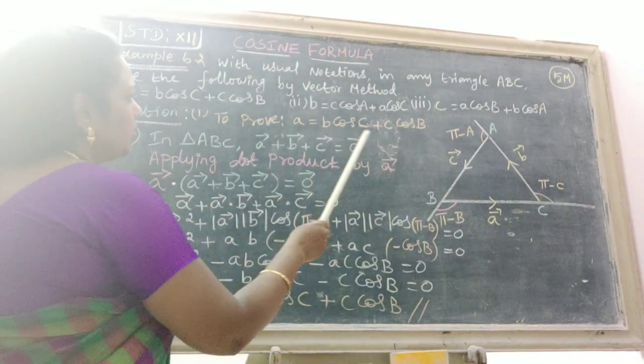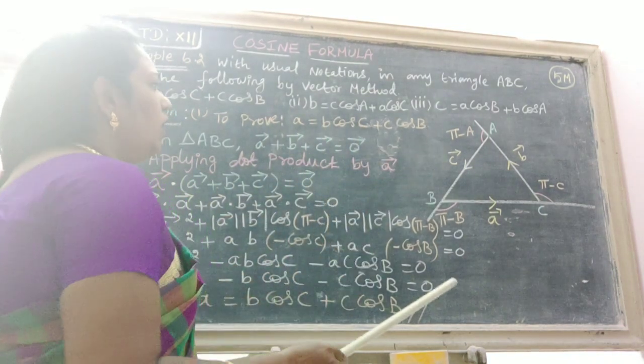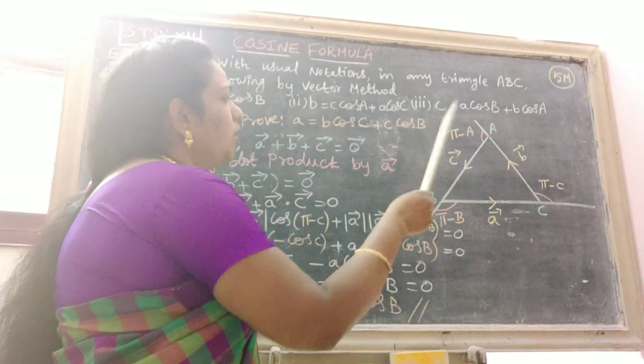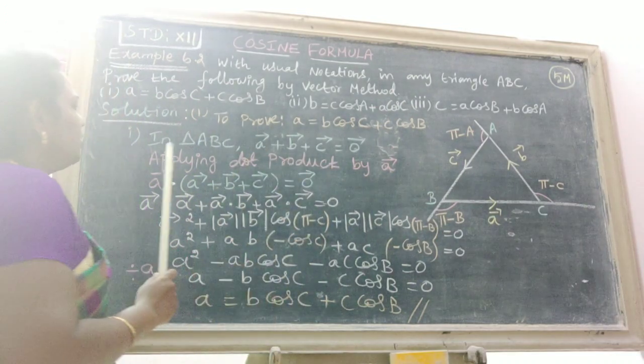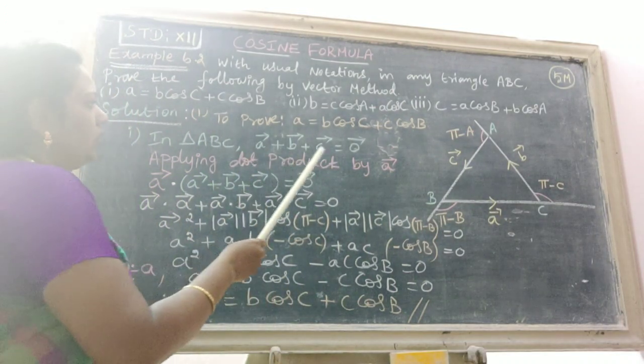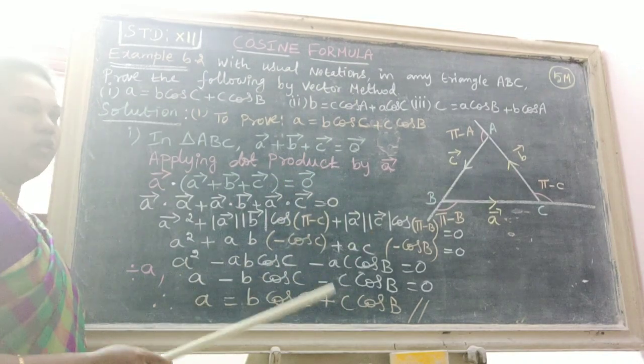A equals B cos C plus C cos B. We already know the diagram with A vector, B vector, C vector. The first step is: in triangle ABC, A vector plus B vector plus C vector equals zero vector.